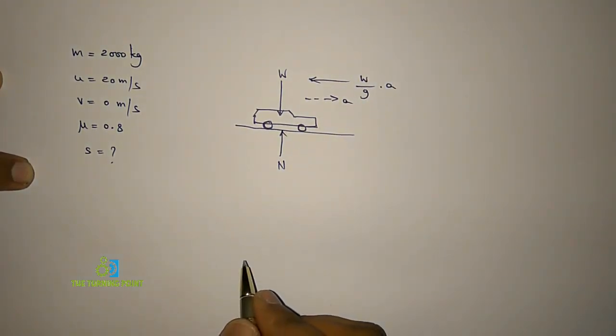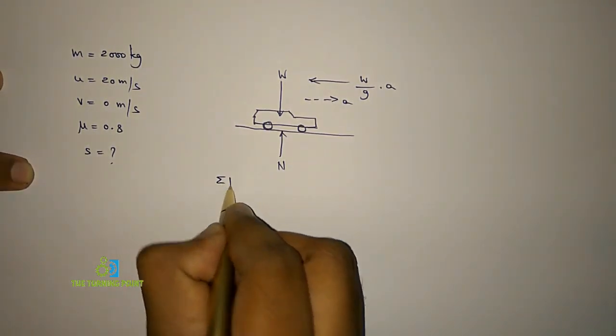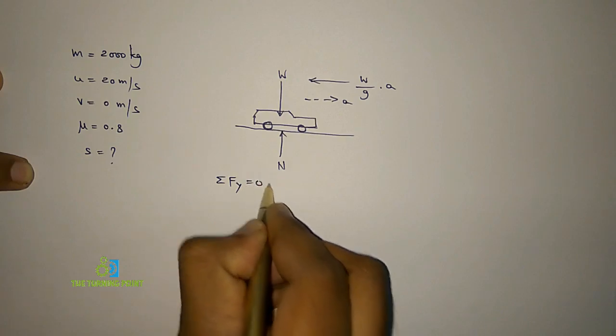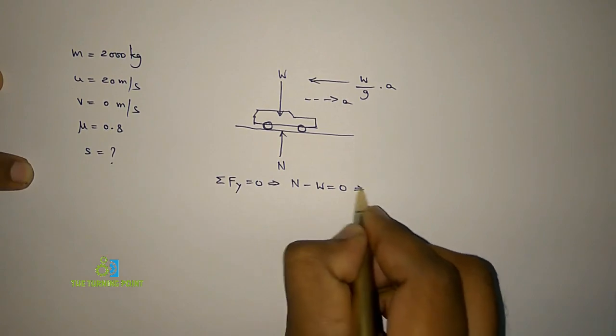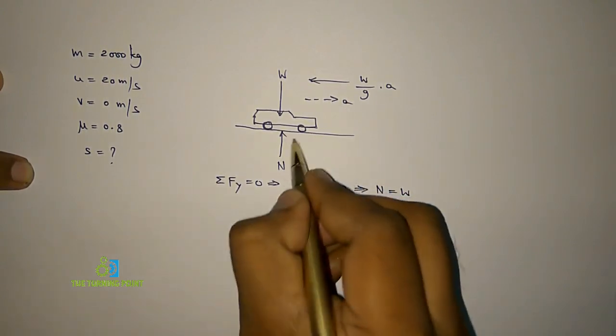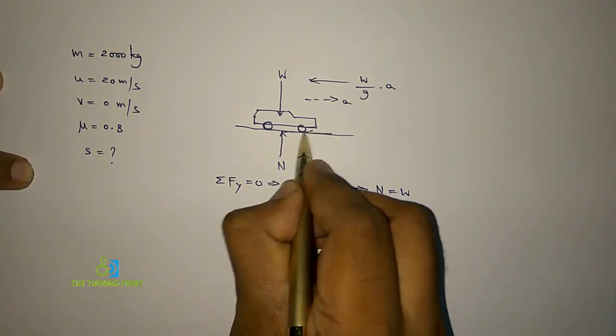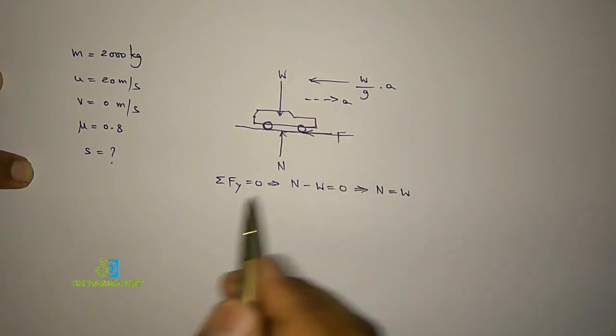So here, applying ΣFy = 0 and ΣFx = 0. When I apply ΣFy = 0, N is acting vertically upwards, w is acting vertically downwards—no other forces. That means normal reaction is equal to weight. Here, frictional force will be in this direction because it is accelerating in this direction.